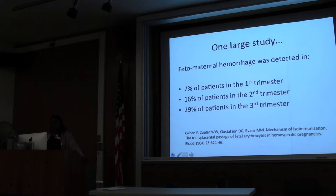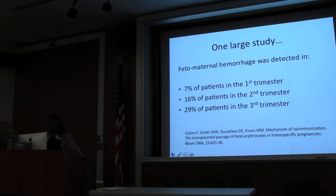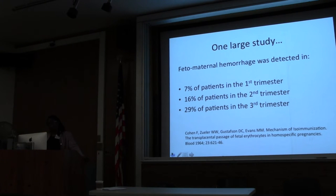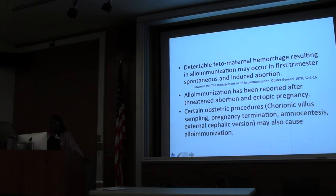Approximately 1 to 2% of allo-immunizations are caused by antepartum fetal-maternal hemorrhage. One large study, Cohen et al., established this: about 7% of patients in the first trimester were allo-immunized, 16% in the second trimester, and 29% in the third trimester — all prior to RhoGAM.